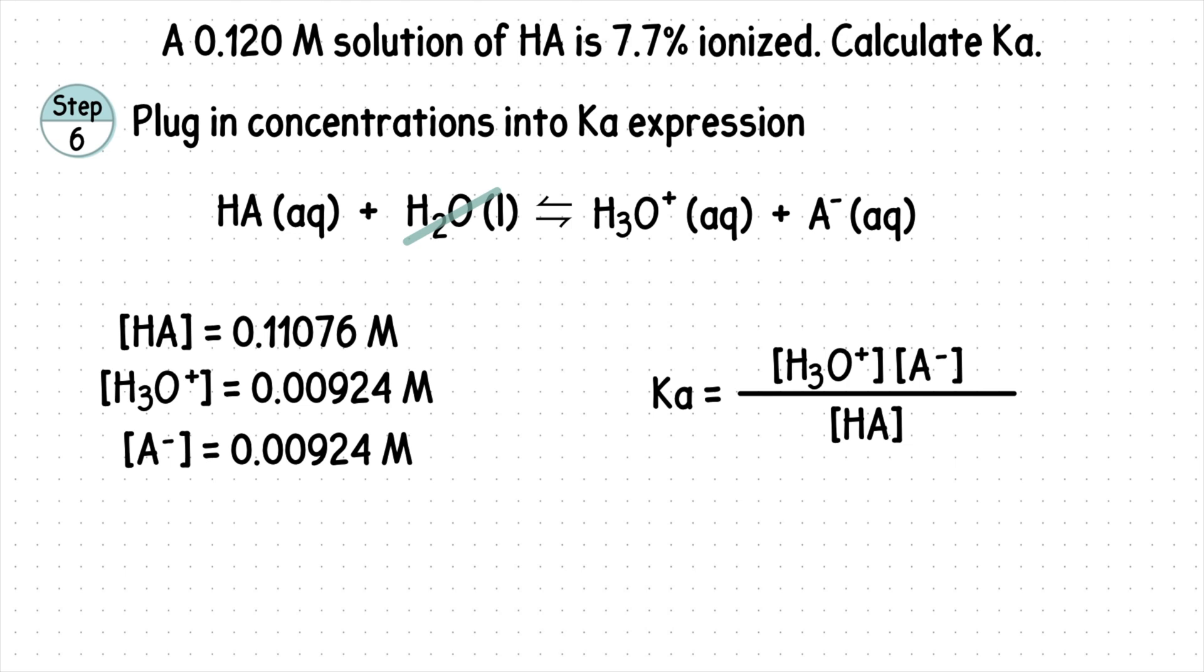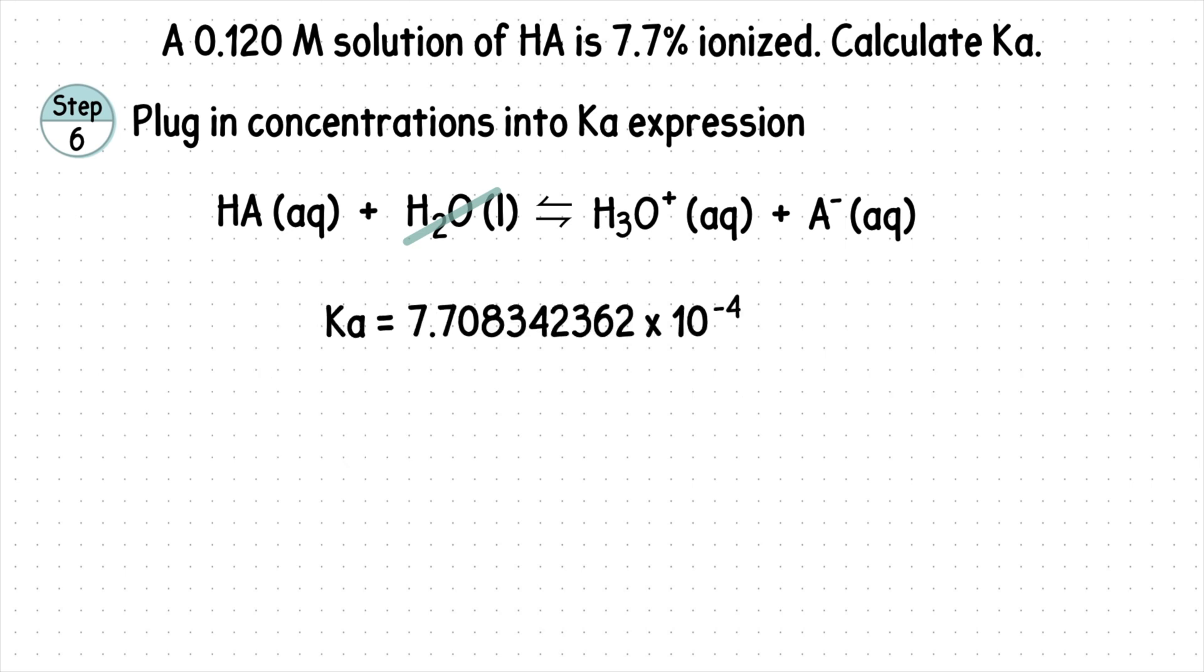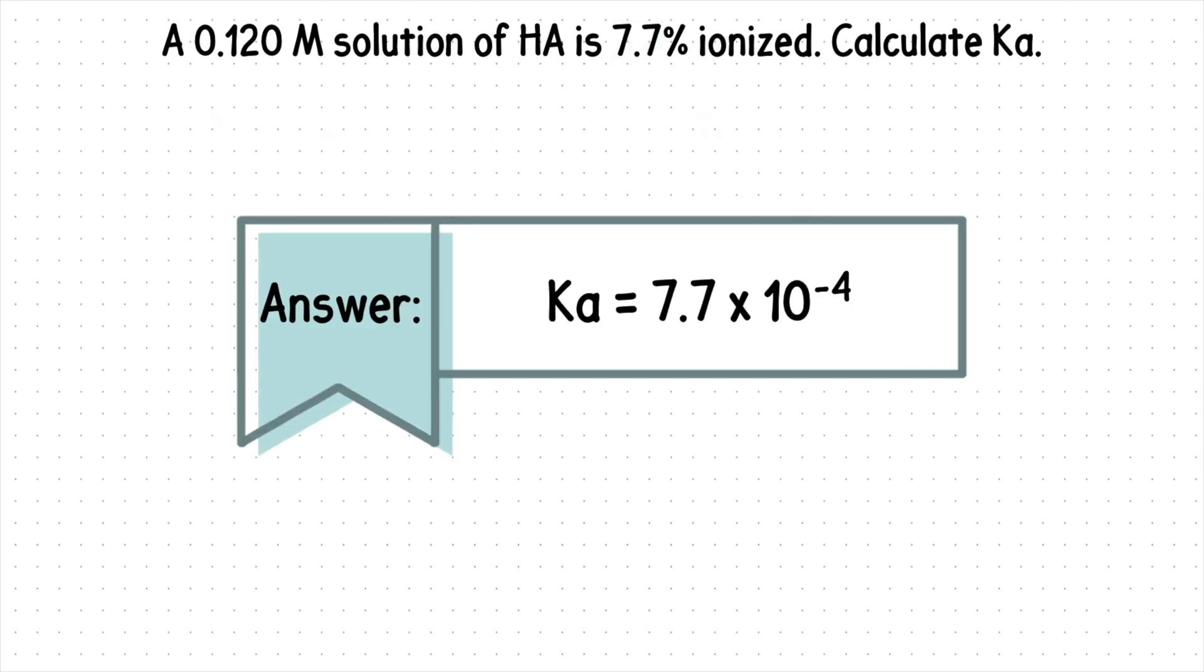Step six, plug in concentrations into the Ka expression. Multiply the numerator first, then divide. We get this value, and we'll round to two sig figs, since that was the lowest amount of sig figs given in the question. Ka is 7.7 times 10 to the negative fourth.